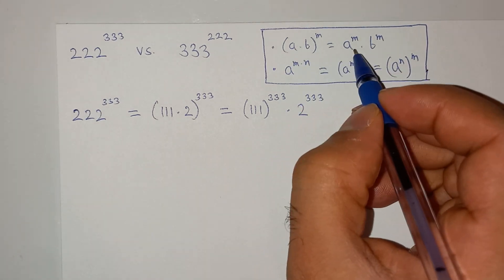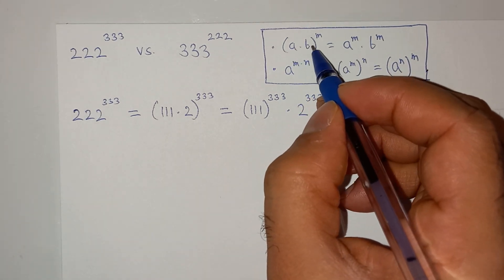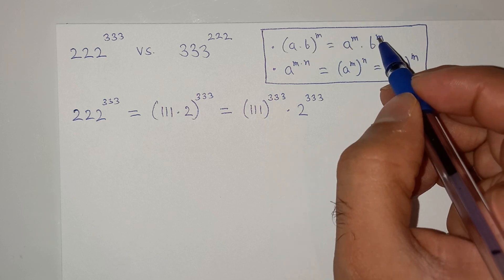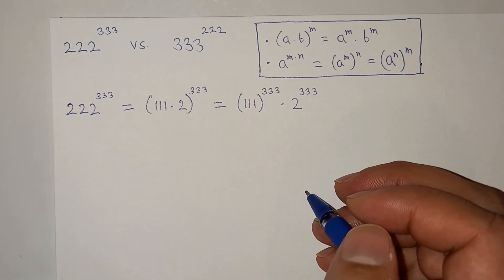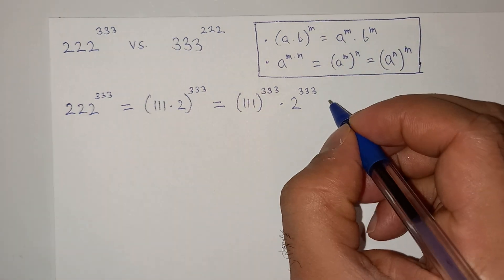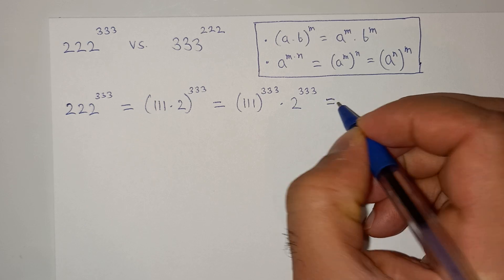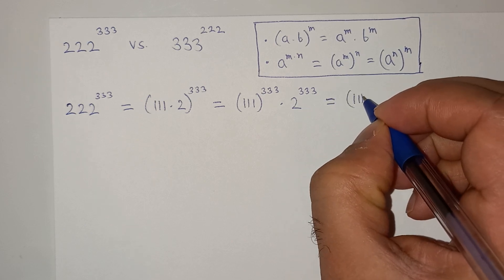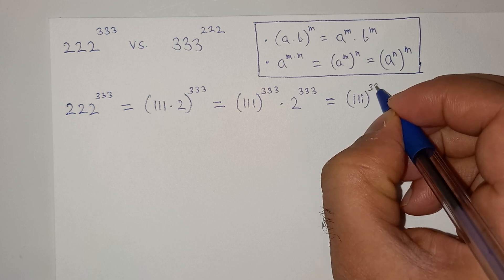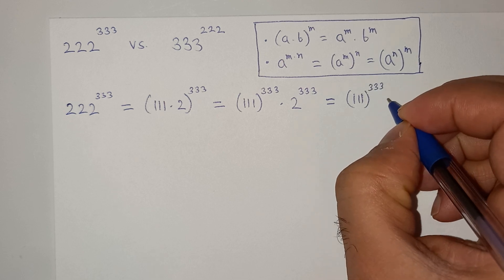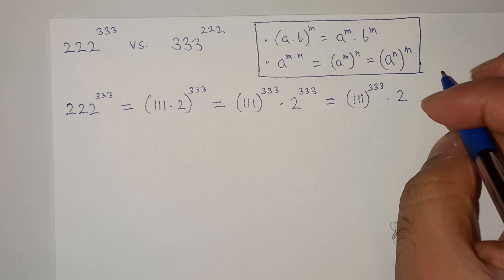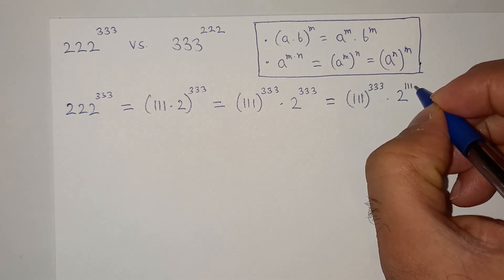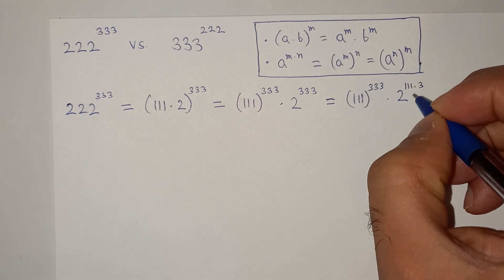As per this exponential rule, which is a multiplied b power m equals to a power m multiplied b power m. Now further we can write this as triple 1 power triple 3 multiplied 2 triple 1 multiplied 3, in power.